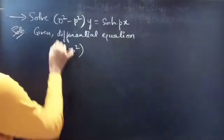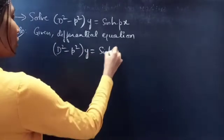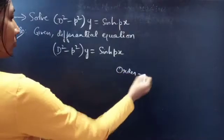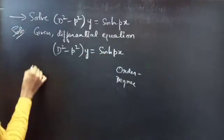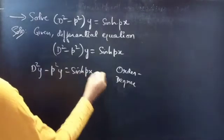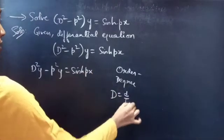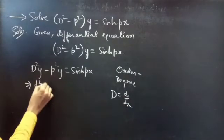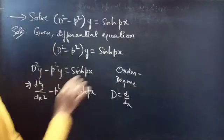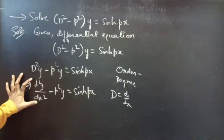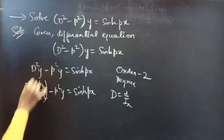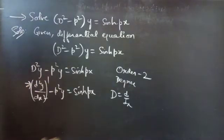We have (D² - p²)y = sinh(px). We can write this as d²y/dx² - p²y = sinh(px), where the differential operator D = d/dx. Here d²y/dx² is the highest derivative, so the order is 2, and the highest power of the highest derivative gives degree 1.